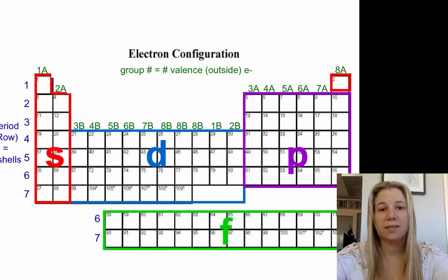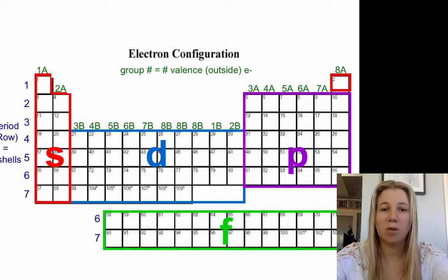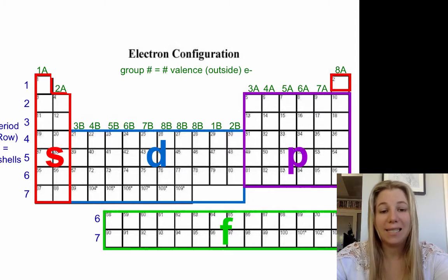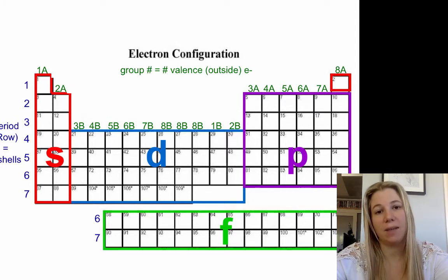It's important for you to understand where these electron configurations are coming from and how the orbitals are actually filled. But it can get very confusing actually writing the notation using the periodic table. And so we do have another method that we can use.